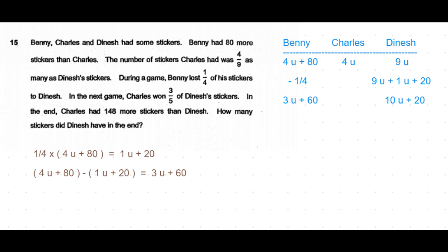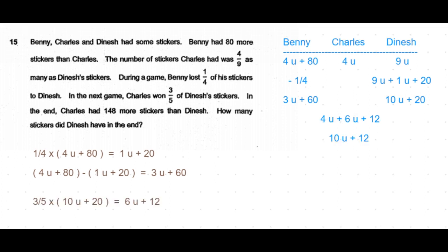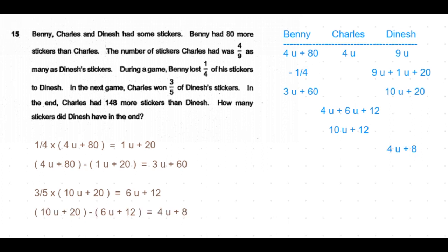In the subsequent game, Charles wins three-fourths of what Dinesh had. Three-fourths of (10 units + 20): three-fourths of 10 units is 6 units, and three-fourths of 20 is 12. So Dinesh loses 6 units plus 12 to Charles. Charles becomes 4 units + 6 units + 12 = 10 units plus 12. Dinesh subtracts that from 10 units plus 20, leaving Dinesh with 4 units plus 8 as his final count.